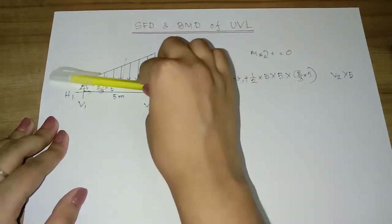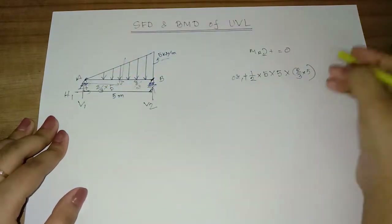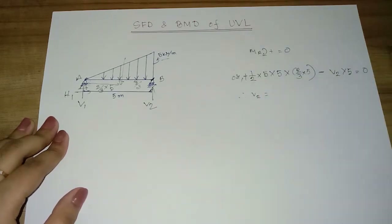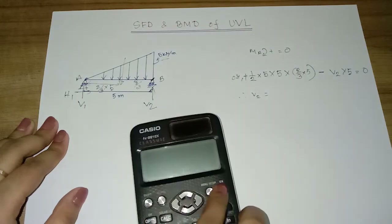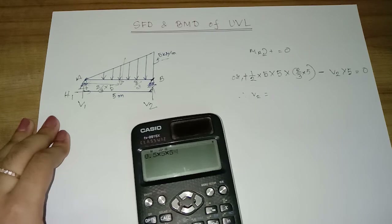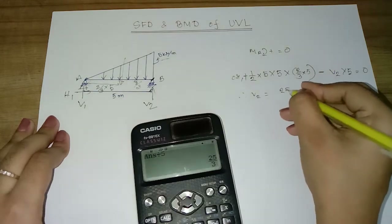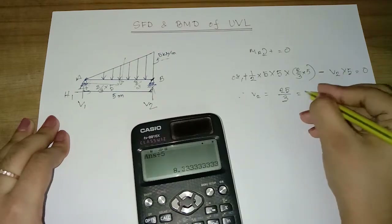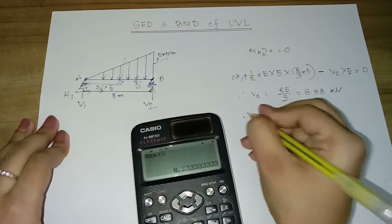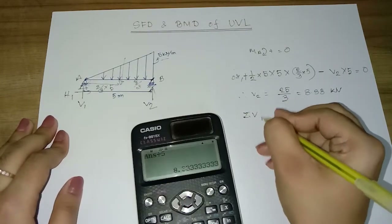Summation of moments about A equals zero. So: half into 5 into 5 into (2/3 into 5) divided by 5 gives V2 = 25/3, which is 8.33 kN.